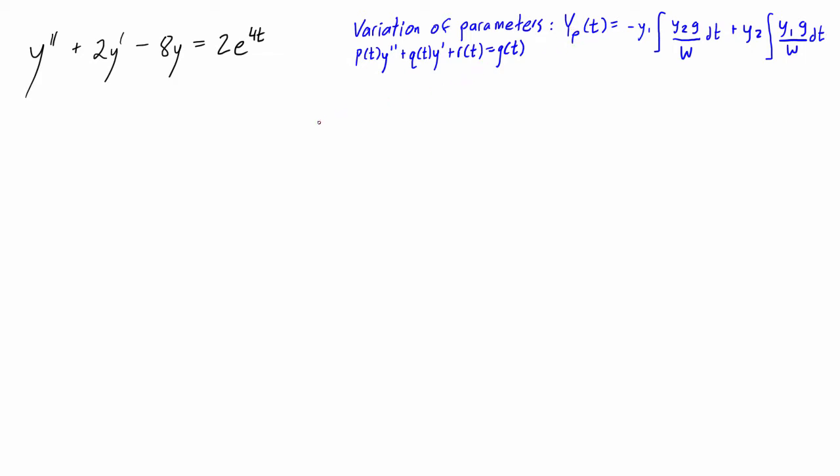So to get started, we want to write the homogeneous equation that is associated with the original differential equation. So that is just y'' plus 2y' minus 8y, and that is all equal to 0. That's all we do. We just set it equal to 0.